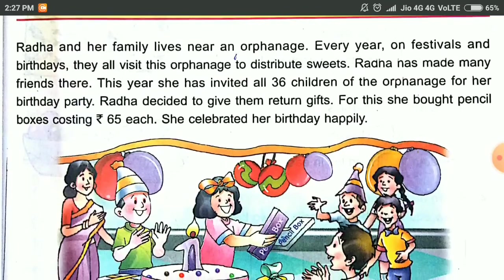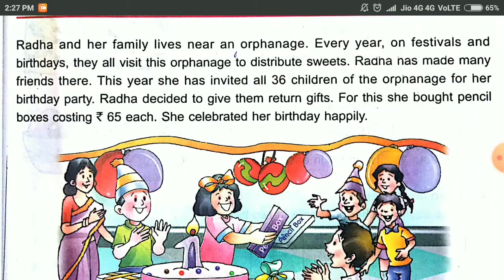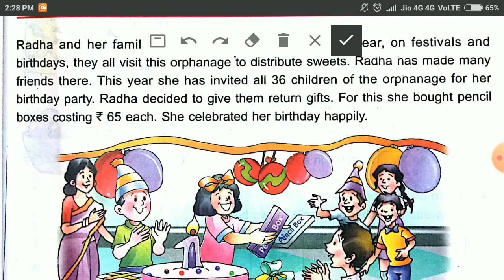Then value-based questions. Radha and her family live near an orphanage. Every year on festivals and birthdays, they visit the orphanage to distribute sweets. This year she has invited all 36 children of the orphanage for her birthday party. Radha decided to give them return gifts, so she bought pencil boxes costing Rs. 65 each. She gave the gift to 36 children and each child gets a gift worth Rs. 65.